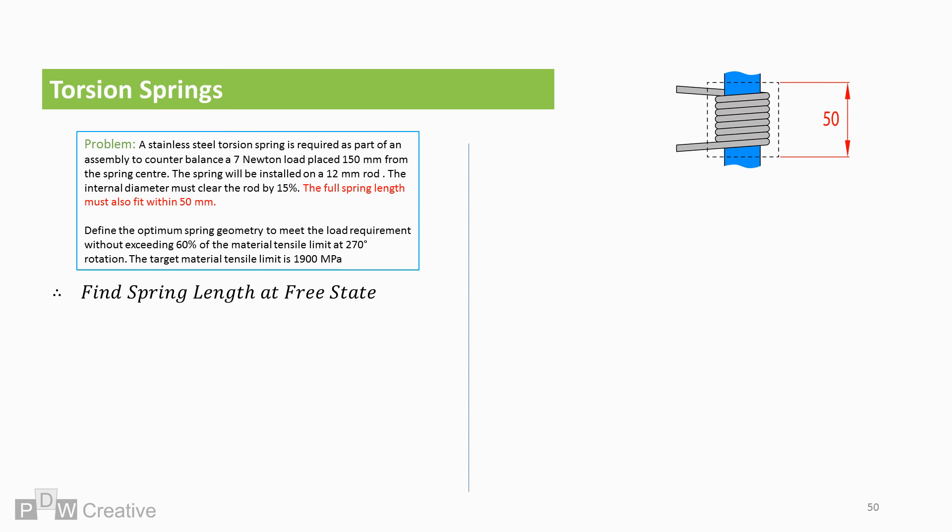Let's now find the last missing piece, starting with the free length. Length at free state, in other words, the spring before loading, is active coils plus 1 times wire diameter, which gives us a length of 43.626 millimetres. So far, we're under the 50 millimetre target.